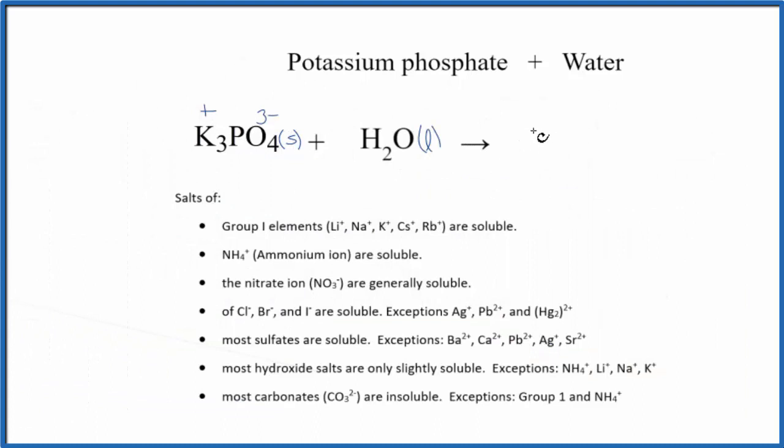To write the equation, we have K plus, which will be aqueous, and this subscript here, the 3, that means we have three of these potassium ions, three separate potassium ions dissolved in water.